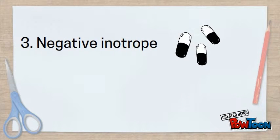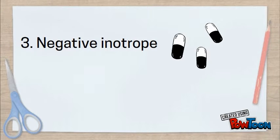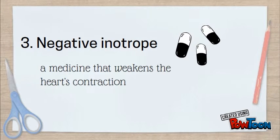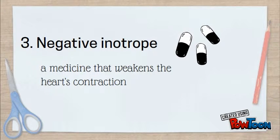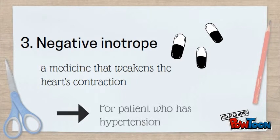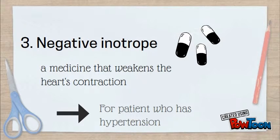Next are negative inotropes. Negative inotropes are medicines that weaken heart contractions, especially for patients who have hypertension.